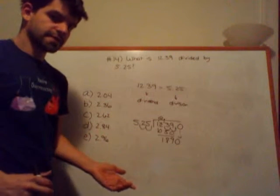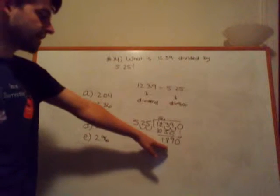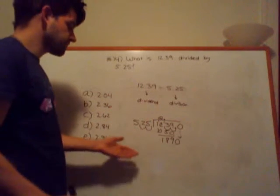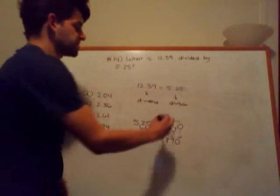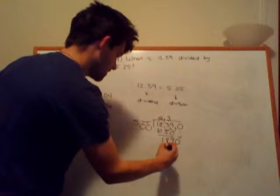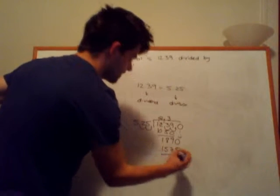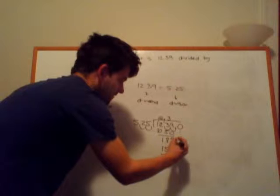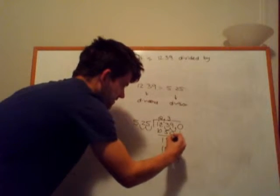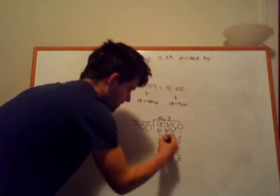Now, just like as I did with the last one, we can see how many times 525 goes into 1890 by taking an estimate that 5 goes into 18 three times. If I did 4, it'd be 20, and that'd be too high. So we'll do 525 times 3, which is 1575. And then if I take the difference of that, I'm going to get 315. 8 minus 7 is 1, 8 minus 5 is 3, 1 minus 1 is 0.